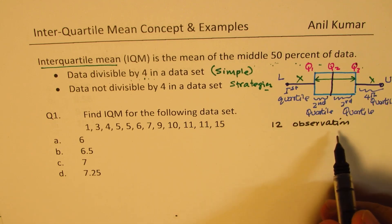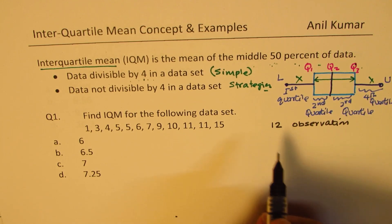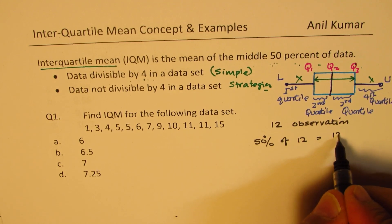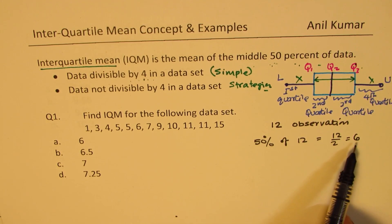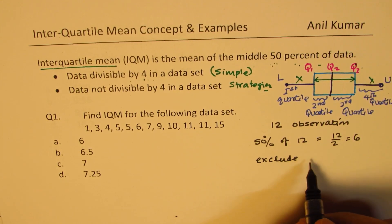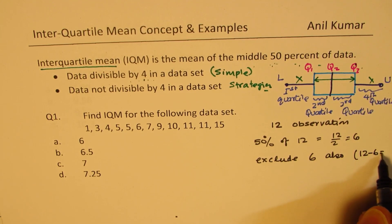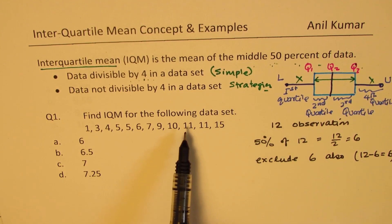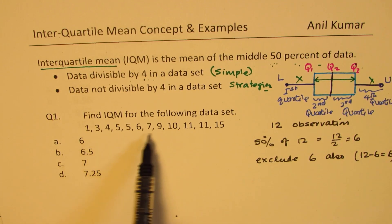Each element of a data set is considered as an observation. 50 percent of 12 is 12 divided by 2, which is 6. So we are interested in 6 middle values — we have to exclude 6, and since 12 minus 6 is also 6, we exclude three from the left side and three from the right side.